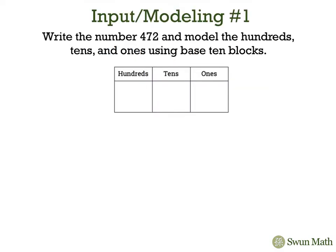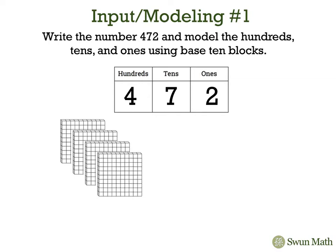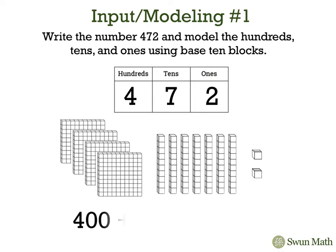Now write the number 472 and model the hundreds, tens, and ones using base 10 blocks. In 472 we have four hundreds, seven tens, and two ones. That would be 400, 70, and 2. In expanded form we would write 400 plus 70 plus 2.